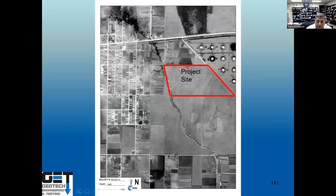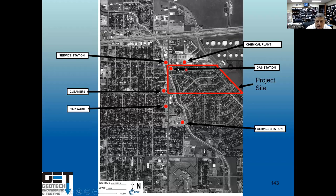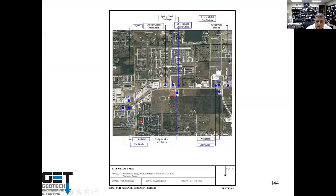If you've got a site in Pasadena ISD on Red Bluff and you want to develop a school there — even if it's empty now — as the area develops you're going to have a service station, cleaner, car wash, chemical plant, and gas stations nearby. All of these can put your property at risk. In Pearland ISD, there's a site with a Kroger service station, an Acura dealership, a Golden Corral, and an NTB nearby. If these are at a higher elevation, a plume of contamination can come to your site.